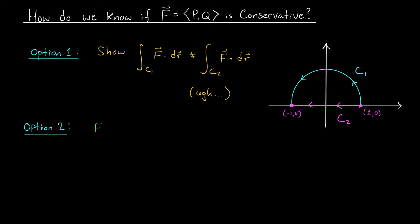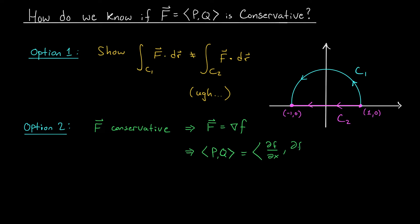Let's suppose for a second that this vector field really is conservative. If capital F is conservative, then it can be written as the gradient of some scalar field, little f. That means that its components P and Q must be the same as the components of this gradient field, which we know are ∂f/∂x and ∂f/∂y. So if F is conservative, then P must equal ∂f/∂x and Q must equal ∂f/∂y. By taking one more derivative of each expression, if we take ∂P/∂y, that's the same as ∂²f/∂x∂y, and if we take ∂Q/∂x, we get ∂²f/∂y∂x.